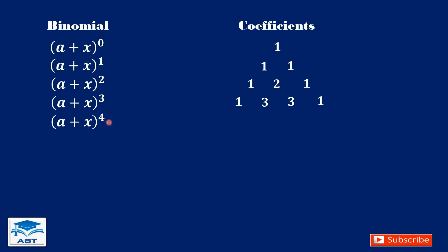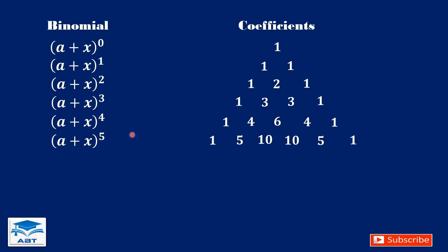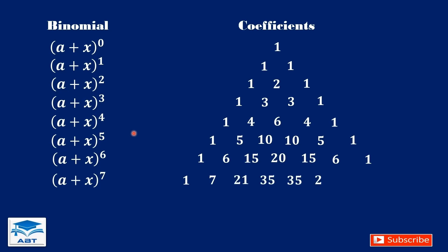For an exponent of 4, we start with 1. Then 1 plus 3 is 4, 3 plus 3 is 6, 3 plus 1 is 4. Then we end with 1. So, following this pattern, we can create the next coefficients, and the next.